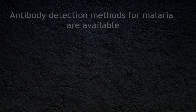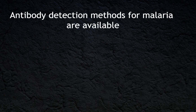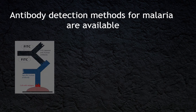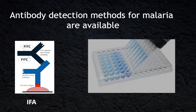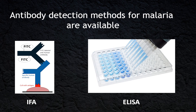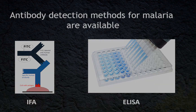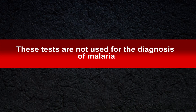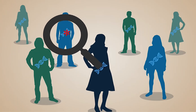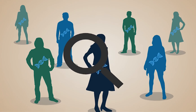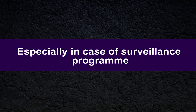Serological tests — antibody detection methods for malaria — are available as Indirect Immunofluorescence Assay or Enzyme-Linked Immunosorbent Assay. However, currently these tests are not used for the diagnosis of malaria. We can use serological tests to detect past exposure history, especially in the case of surveillance programs.